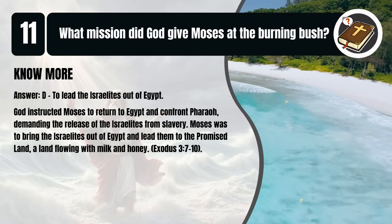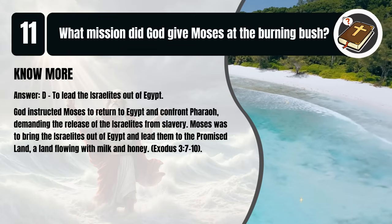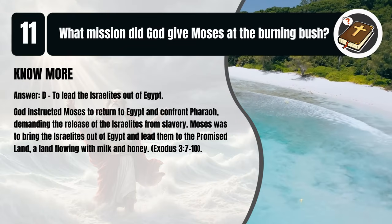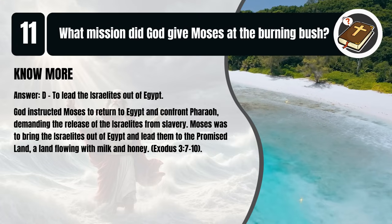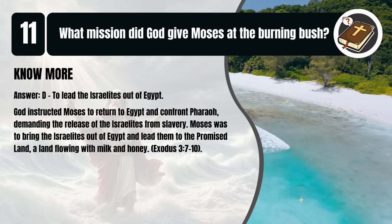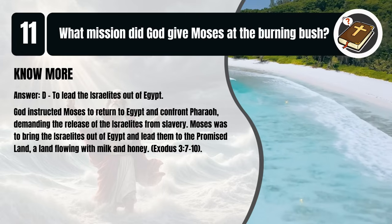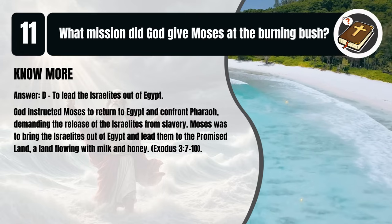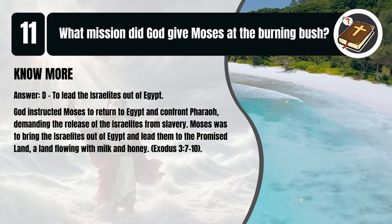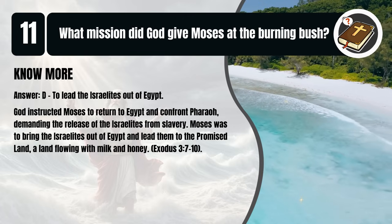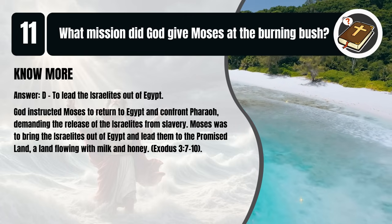That's D. To lead the Israelites out of Egypt. God instructed Moses to return to Egypt and confront Pharaoh, demanding the release of the Israelites from slavery. Moses was to bring the Israelites out of Egypt and lead them to the promised land, a land flowing with milk and honey. Exodus 3:7-10.